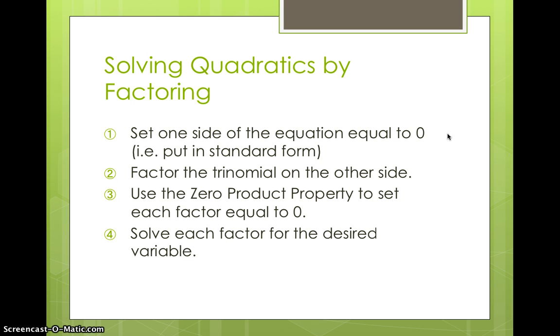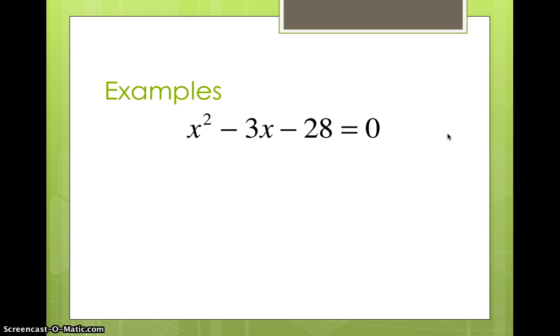Let's look at the first example. We have the equation x squared minus 3x minus 28 equals zero. First thing we ask ourselves: is this in standard form? Does one side of the equation equal zero? Yes it does, so we can skip that first step. Now we need to factor the left-hand side. We need to come up with two numbers that multiply to negative 28 and add to negative 3. If you thought about negative 7 and positive 4, you're absolutely right.